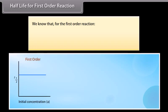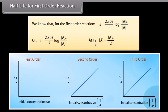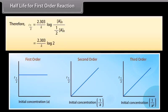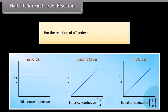For the first-order reaction, K = (2.303/T) × log(A₀/A). T can be calculated as T = (2.303/K) × log(A₀/A). At T½, A = A₀/2, so T½ = (2.303/K) × log 2 = 0.693/K. Hence, the half-life period for a first-order reaction does not depend upon the initial concentration of reactants. For a reaction of nth order, T½ is inversely proportional to A₀^(n−1).